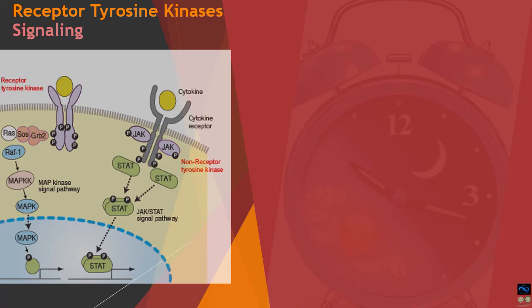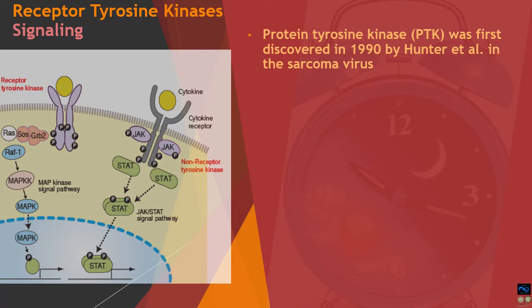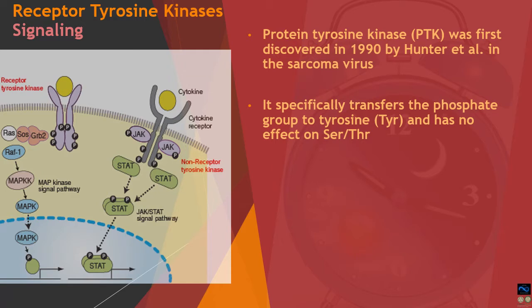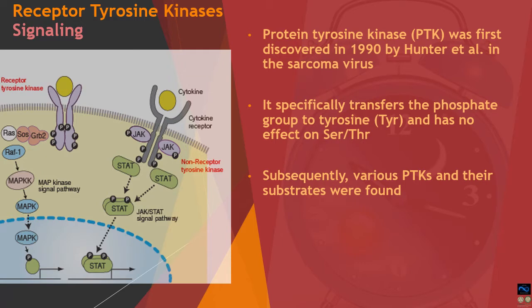As required in every lecture, a brief introduction about receptor tyrosine kinase signaling: this signaling is a subclass of the higher umbrella group called protein tyrosine kinase signaling. These were first discovered in sarcoma viruses by Hunter et al. in 1990, and are named because they contain tyrosine motifs located internally. Protein tyrosine kinases are categorized into two important categories: receptor tyrosine kinases and non-receptor tyrosine kinases.